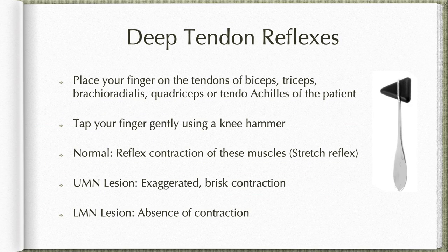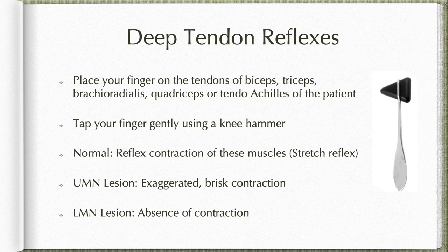To elicit deep tendon reflexes, place your finger on the tendon of either biceps, triceps, brachioradialis, the ligamentum patellae or tendon of quadriceps, or tendo achilles of the patient, and tap gently using a knee hammer. Normally there is a reflex contraction due to the stretch reflex. In upper motor neuron lesion this contraction will be exaggerated and brisk, whereas in lower motor neuron lesion there is absence of contraction.